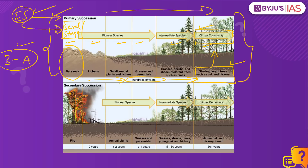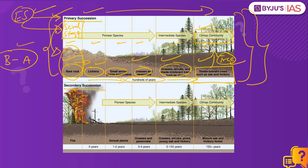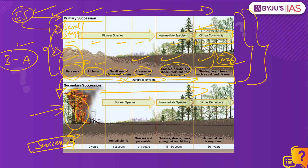Ecological succession can be of two types: primary and secondary. In primary succession, the succession begins with a barren piece of land which gradually evolves to give birth to higher species such as small lichens, then plants and grass, then eventually shrubs and finally a stable tree community. But such a community undergoing primary succession could be hit by a disaster such as a forest fire. After the disaster, the succession has to start over, but this time it doesn't begin from a barren piece of land — instead it begins from an intermediate stage. As a result, secondary succession is always much faster than primary succession.